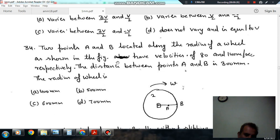of a wheel as shown in the figure. They have velocities of 80 and 140 meters per second respectively. The distance between points A and B is 300 mm. The radius of the wheel is: (a) 400 mm, (b) 500